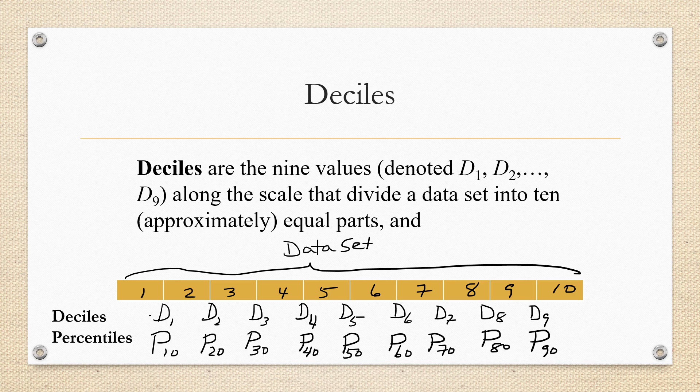So we can observe that decile D1 is the same as percentile P10. Each decile corresponds to a percentile: P10, P20, P30, P40, P50, P60, P70, P80, and P90.